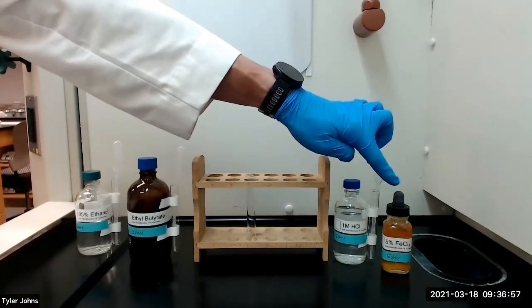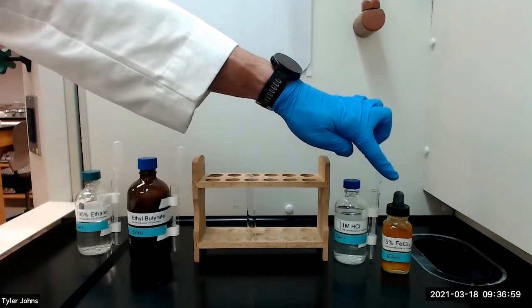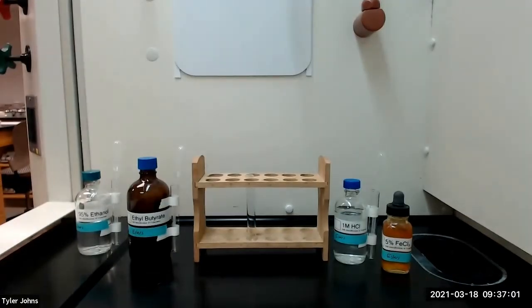We will then add one to two drops of 5% ferric chloride solution. The appearance of a burgundy, magenta, or reddish brown color indicates a positive ferric chloride test.